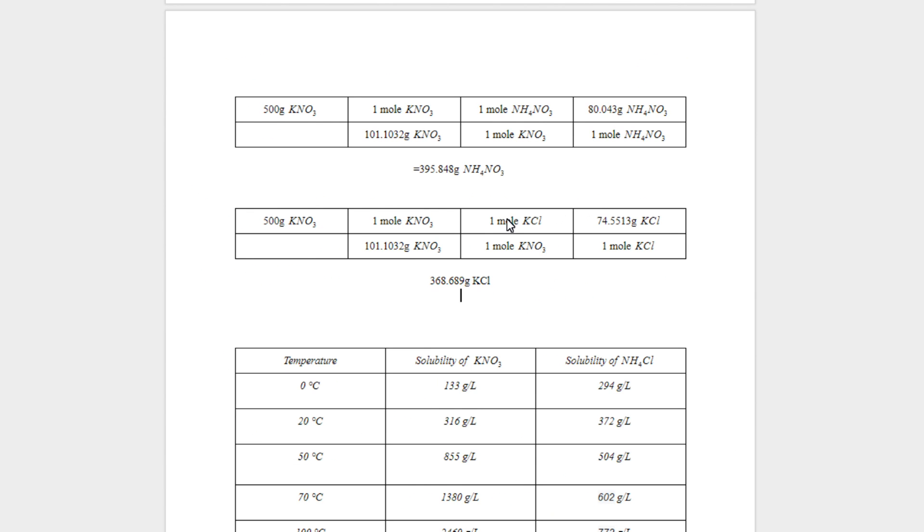Alright, so now that we know Wikipedia hasn't lied to us, and the reaction is favorable at room temperature, we can go about actually making some of the potassium nitrate. And so if I want to produce 500 grams of potassium nitrate, you can see I've done some simple stoichiometry to determine the amount of the reactants that I will need, and I've determined these values. So now we can go weigh out how much we need.